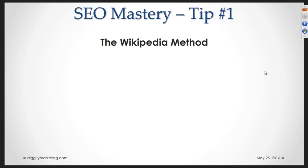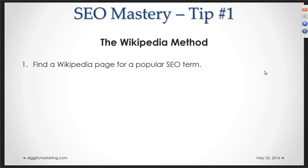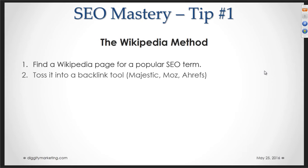The Wikipedia method looks like this. You're going to find a Wikipedia page for a popular SEO term, then take that Wikipedia page and toss it into a backlink tool.